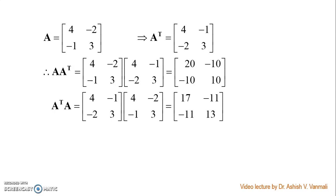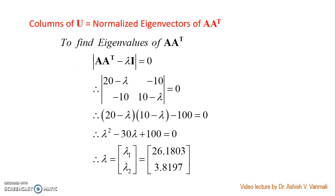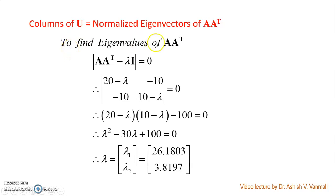So we will have different U and different V in this particular case. The columns of U are the normalized eigenvectors of A·A transpose. So we need to find those normalized eigenvectors, and that will give us U. For that, we will first find the eigenvalues of A·A transpose.